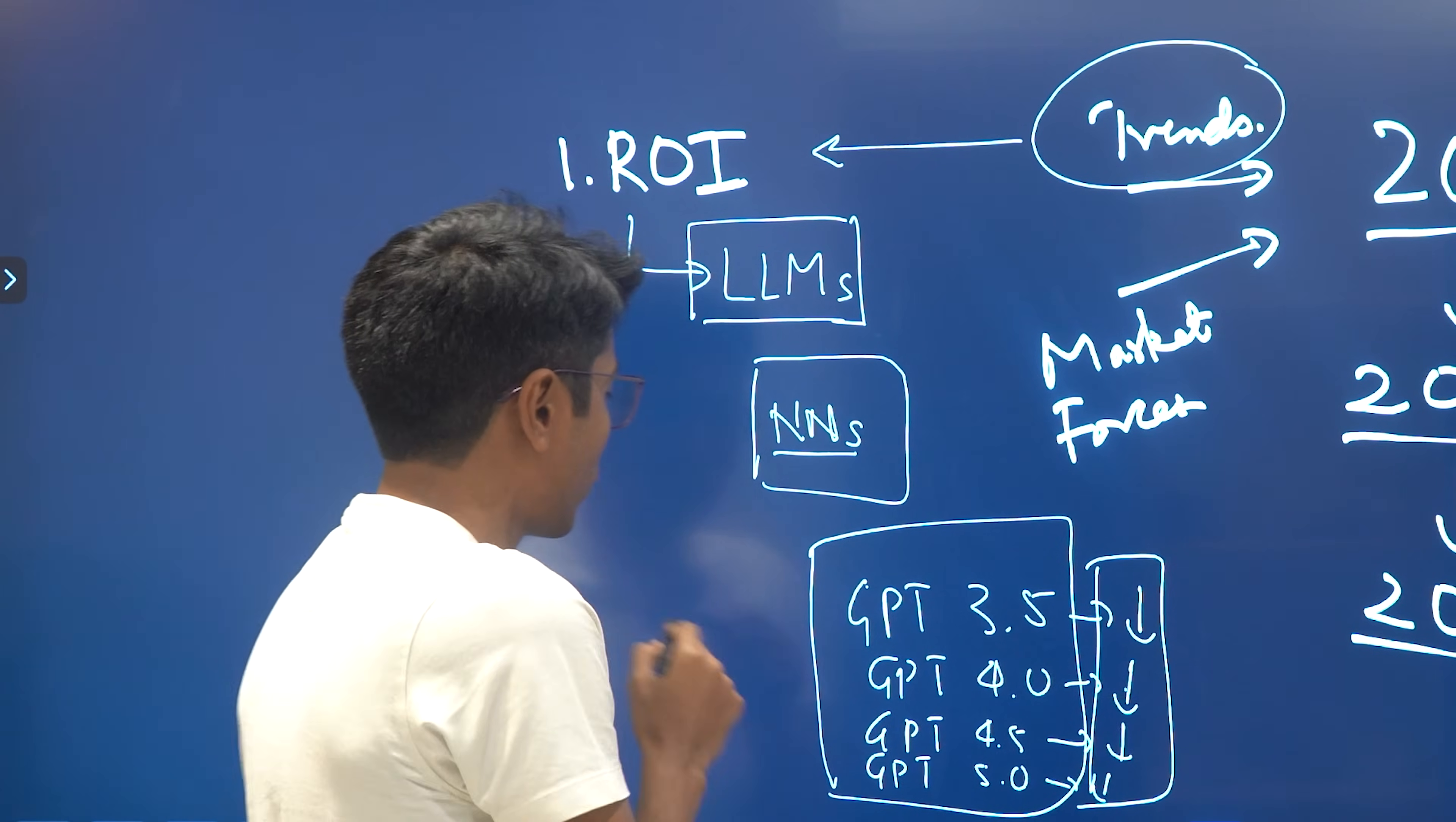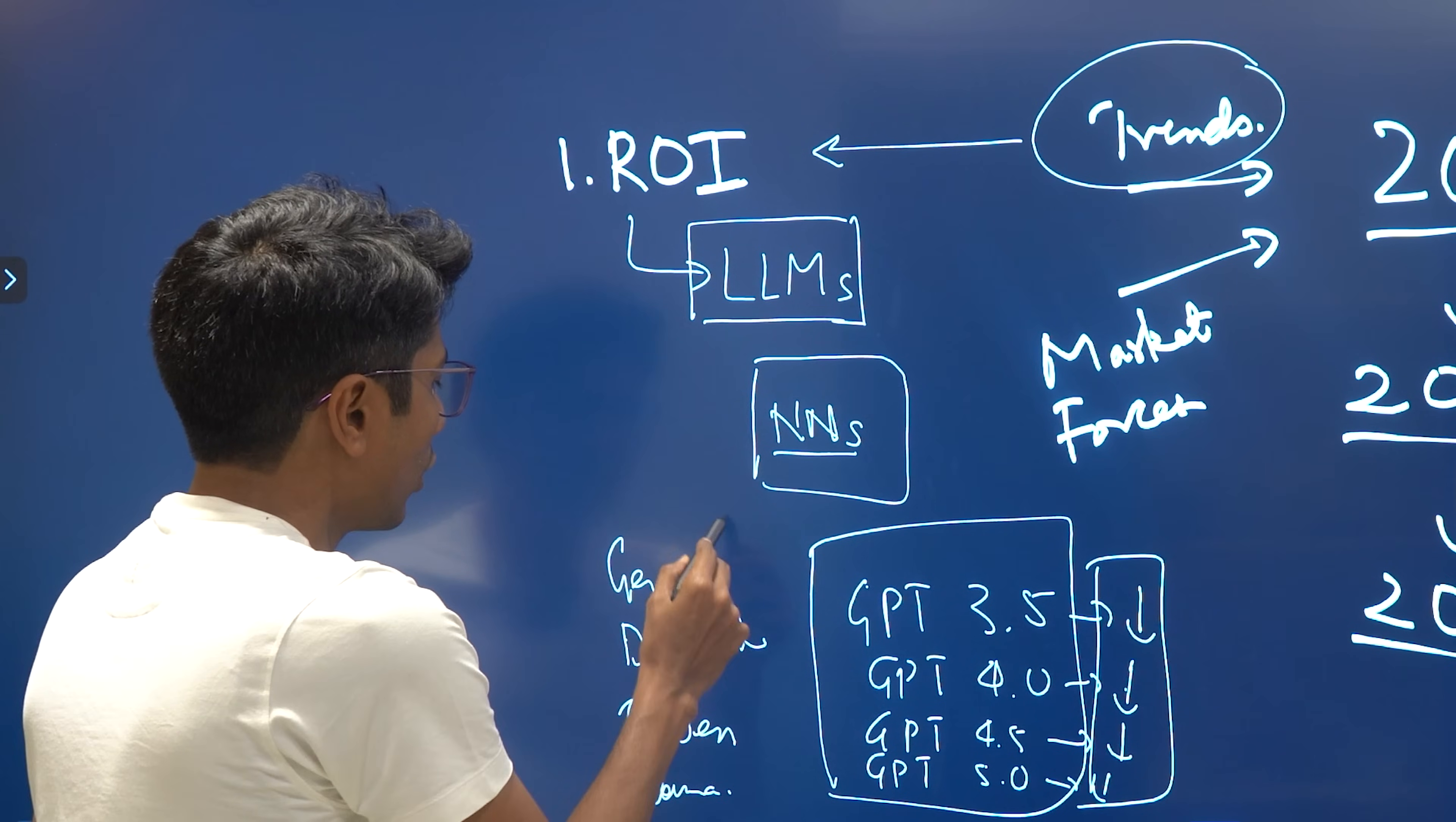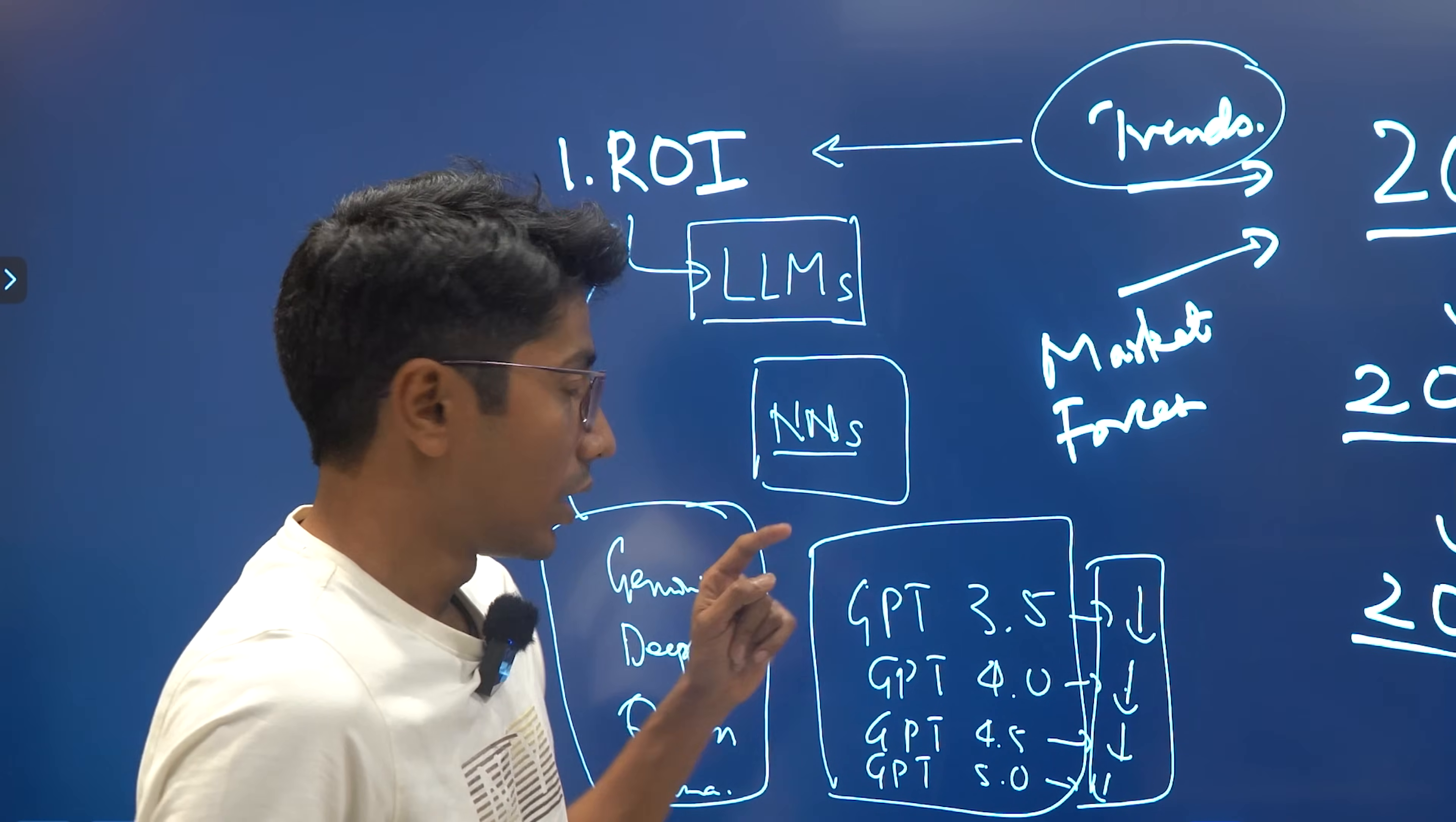This is just one company, GPT. So is it not the case for Gemini? Is it not the case for Deep Seek? Is it not the case for Qwen or Llama? Well, all of them seem to be suffering from the same problem. Low return on investment for more and more scaling of the models. That's one trend.